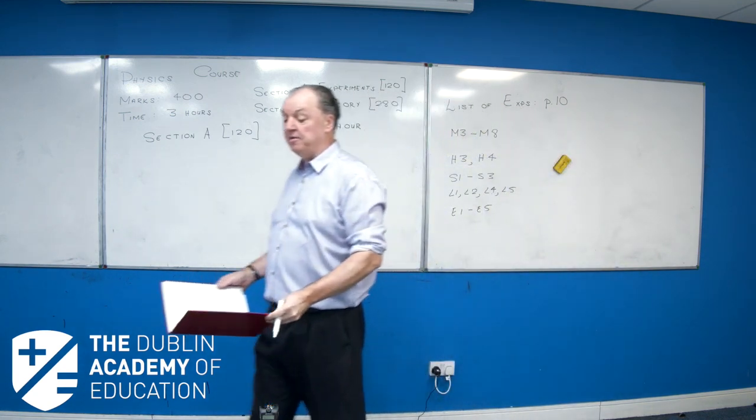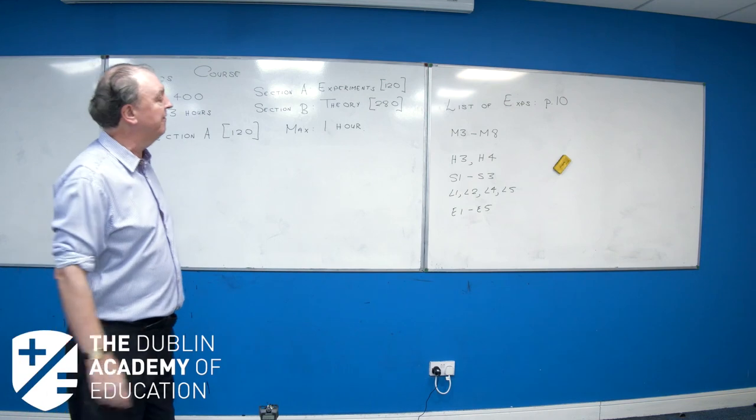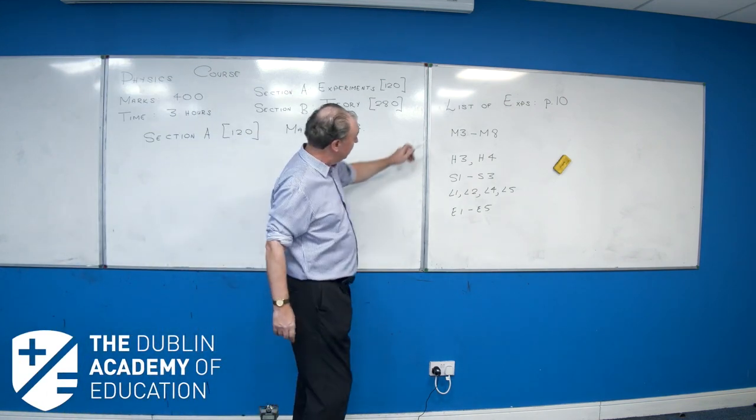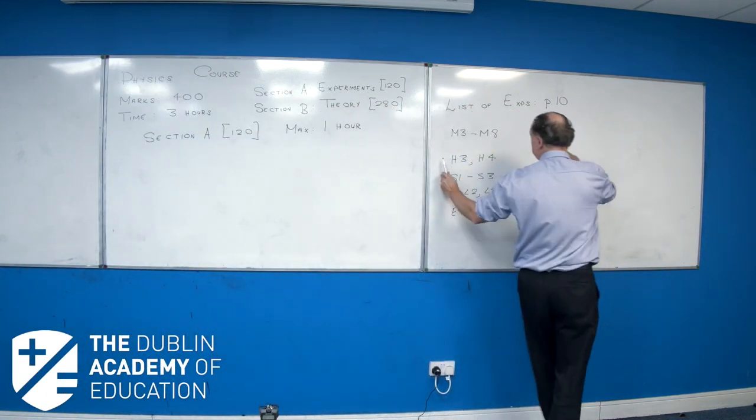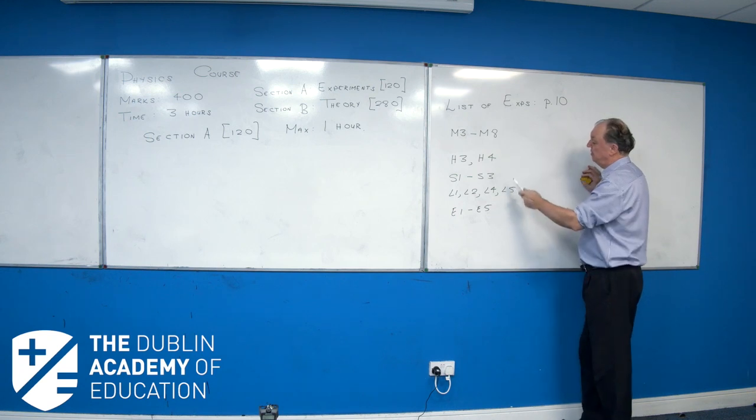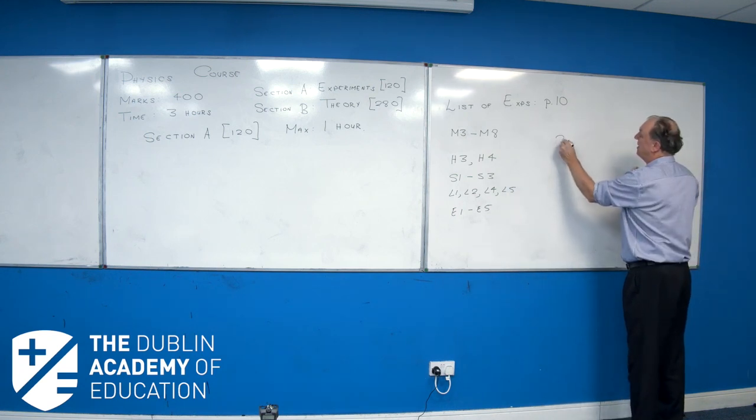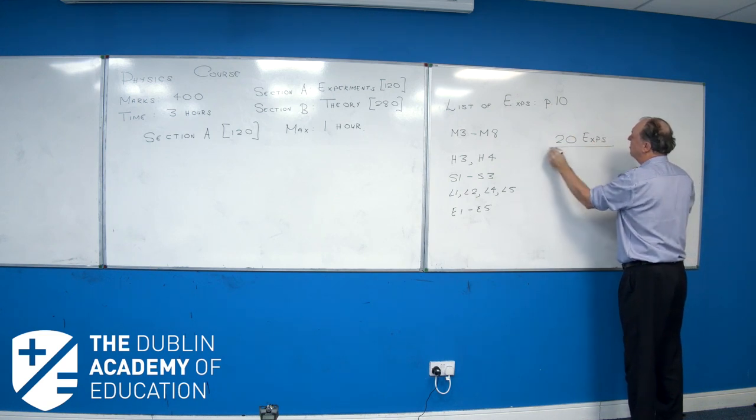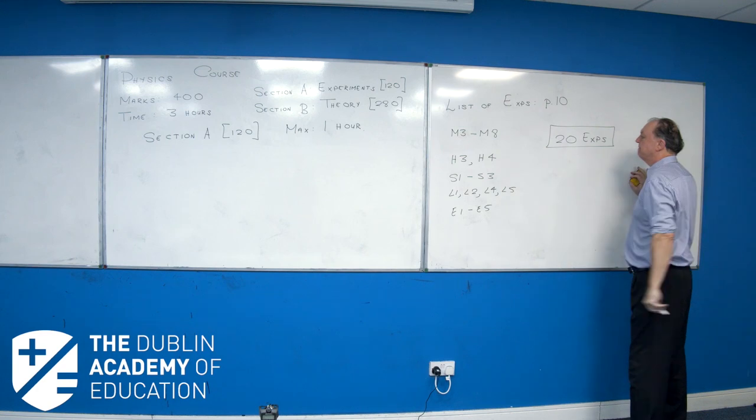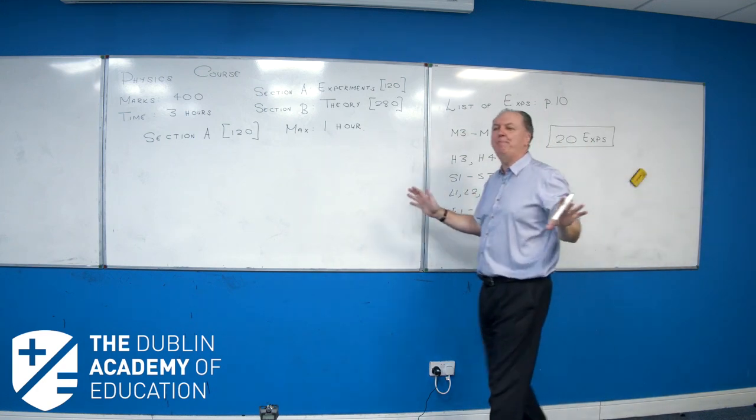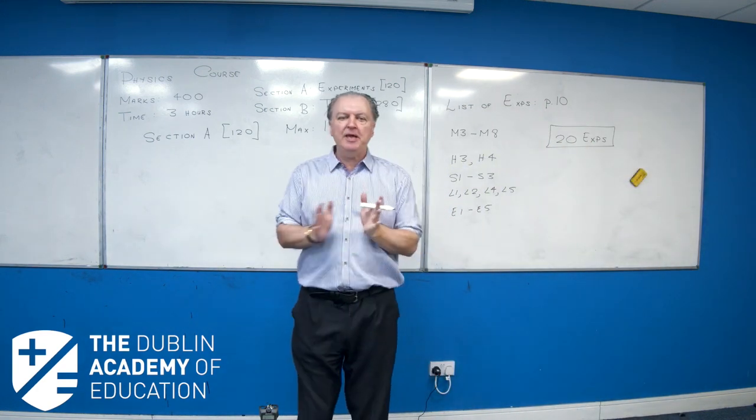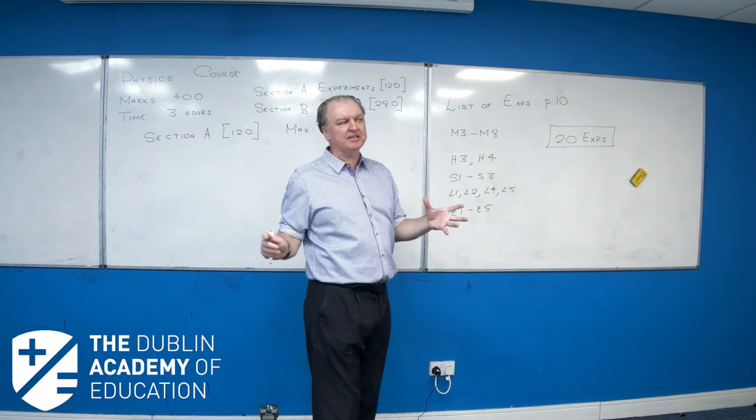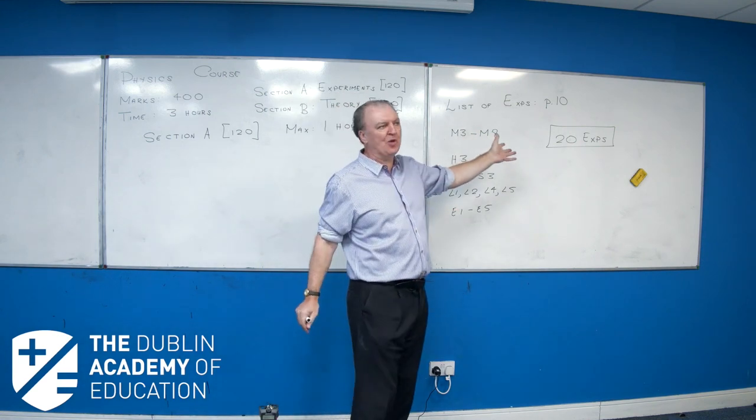So overall, what am I actually talking about? I'm talking about doing 6, and 2 is 8, and 3 is 11, and 4 is 15, and 5 is 20. We're talking about all together, you having to study 20 experiments. That's not a huge, that's not a big deal. Now, I'll explain as I go along in this lesson, how you prepare for those 20 experiments.